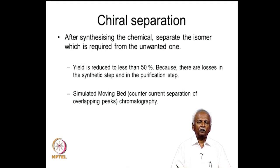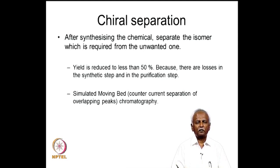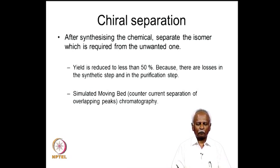Unfortunately, when we do this the yield automatically drops to 50 percent, because the racemic form has both chiral isomers in equal proportions. With additional losses in the synthetic and purification steps, we end up with a yield much less than 50 percent. This turns out to be an extremely undesirable route, but nevertheless significant advances have been made in separation technology.